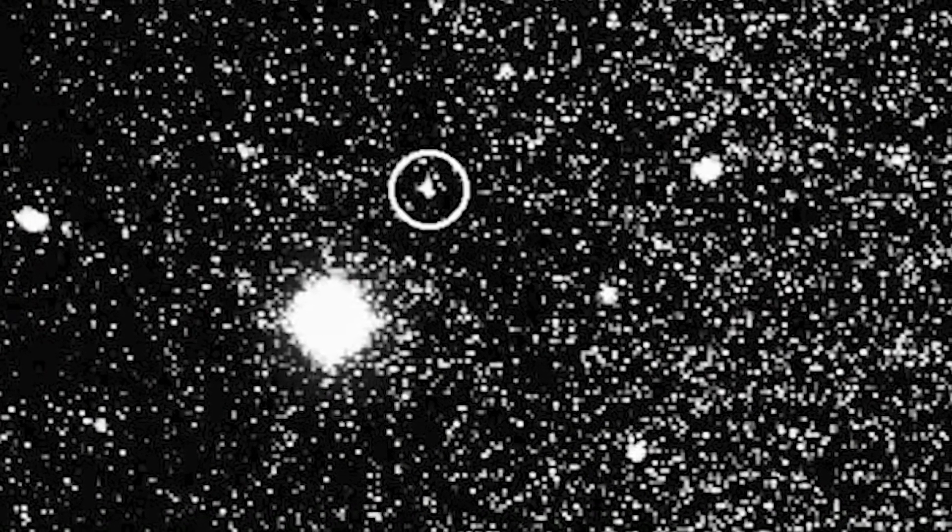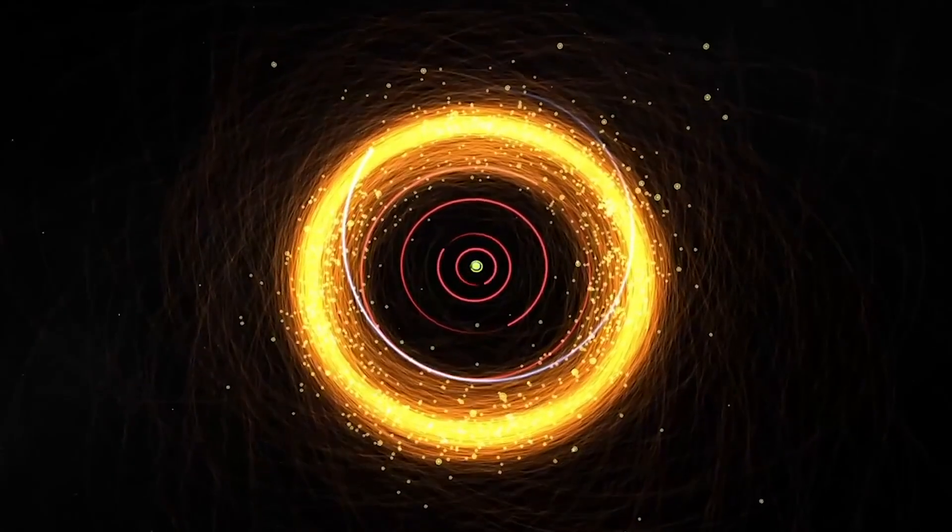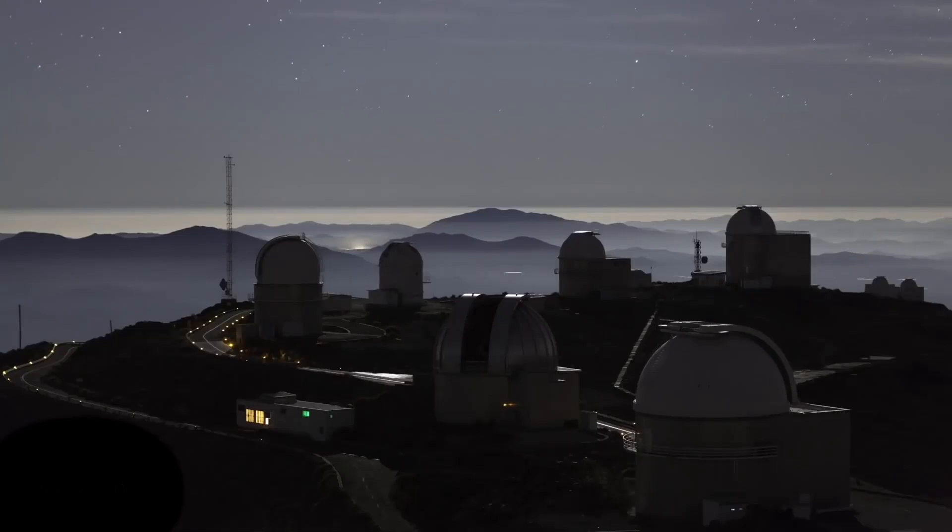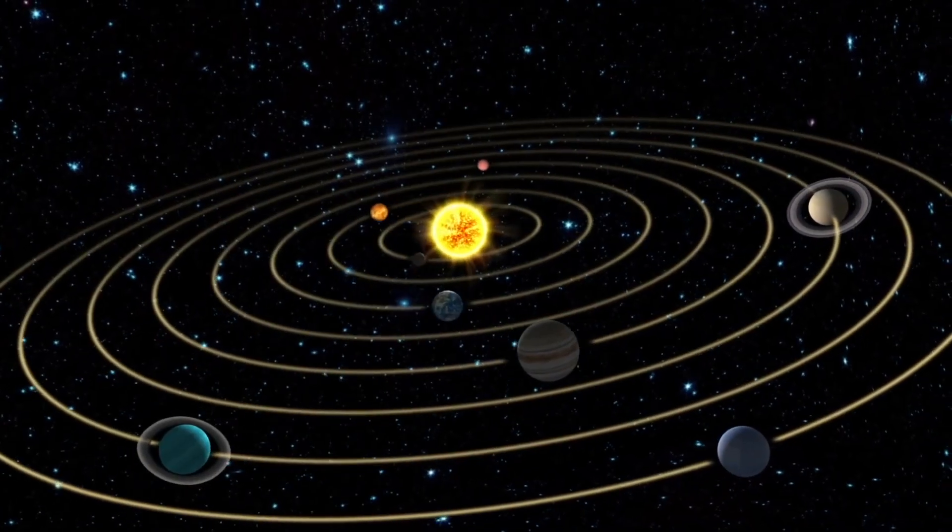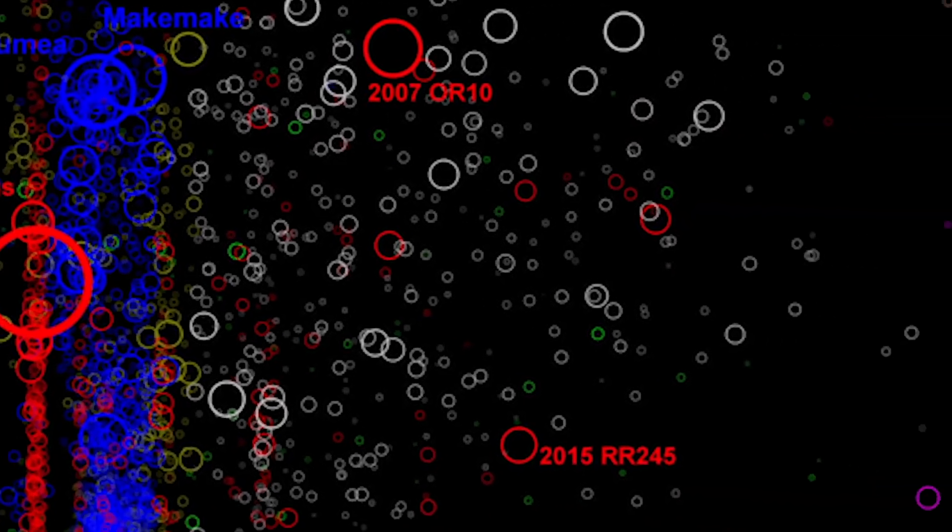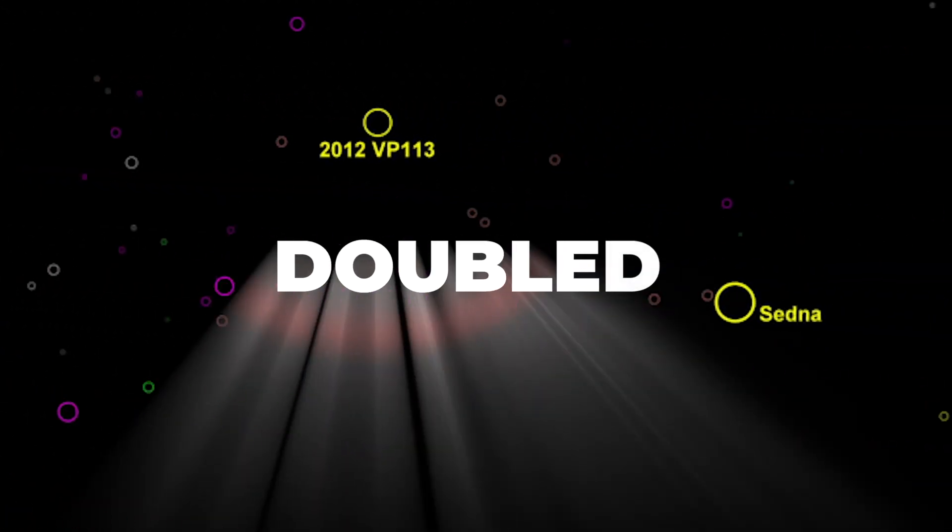During the next few decades, researchers found more and more objects, which gave them more clues about how our solar system formed. And when the team of astronomers from the DES looked at the data recorded from beyond the orbit of Neptune, the number of known objects floating out there more than doubled.